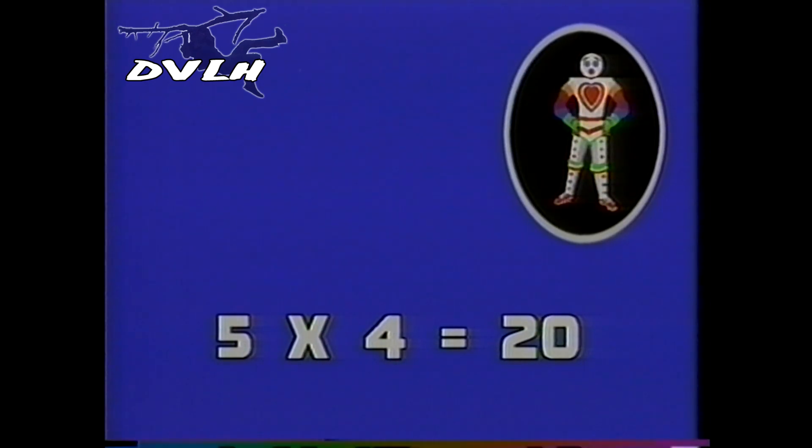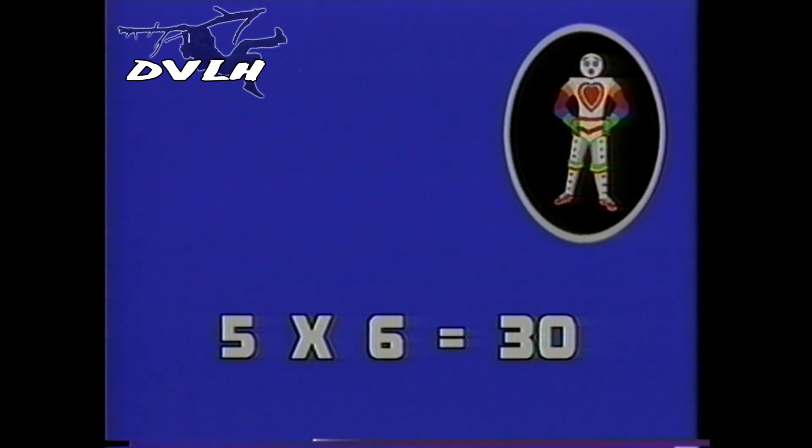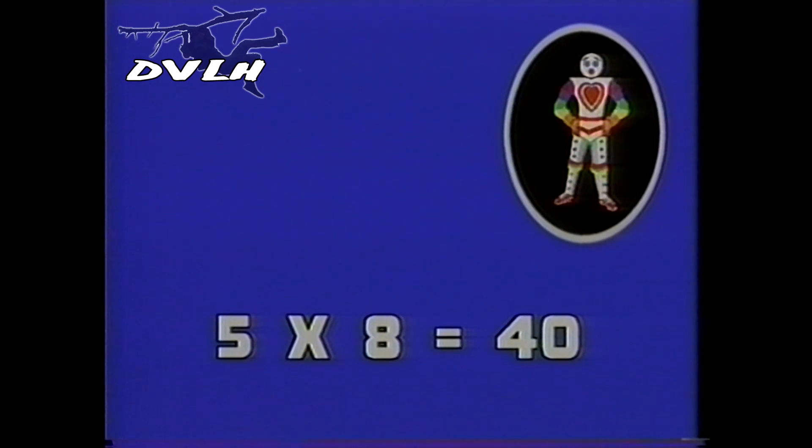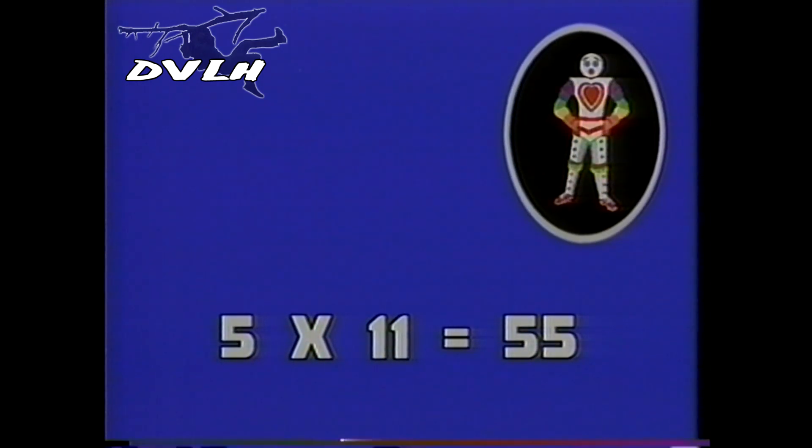Five times one is five. Five times two is ten. Five times three is fifteen. And five times four is twenty. Five times five is twenty-five. Five times six is thirty. Five times seven is thirty-five. And five times eight is forty. Five times nine is forty-five. Five times ten is fifty. Five times eleven is fifty-five. Five times twelve is sixty.